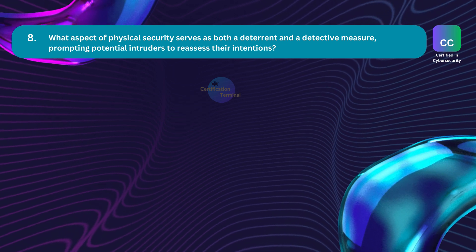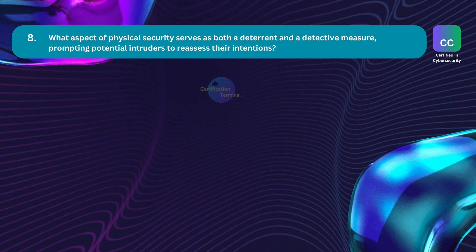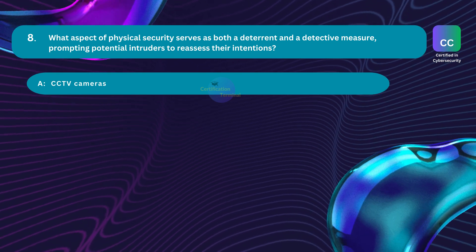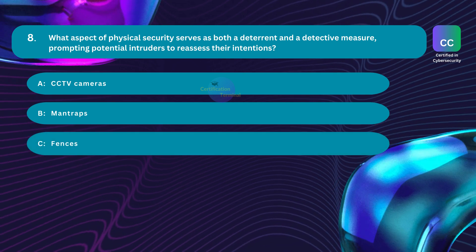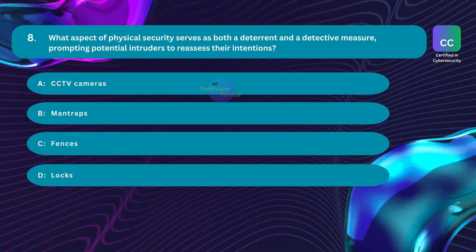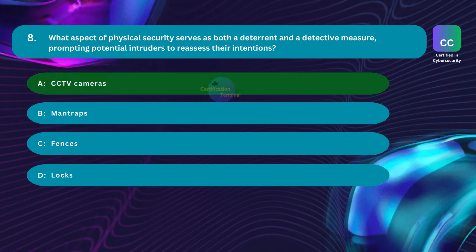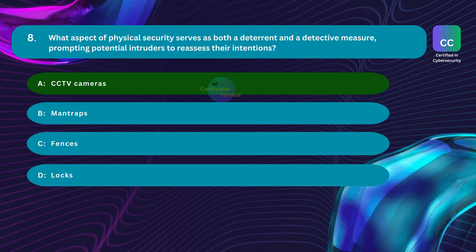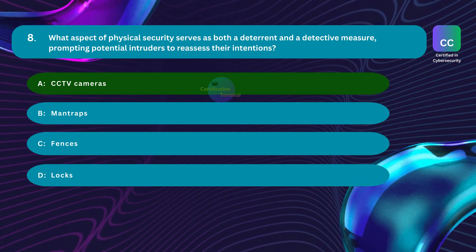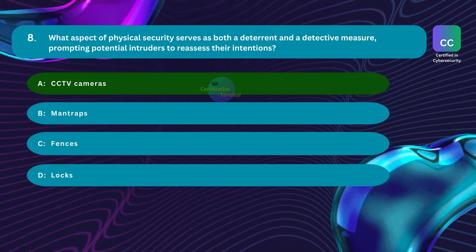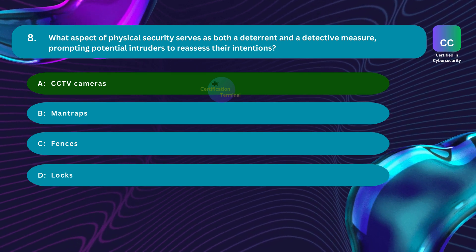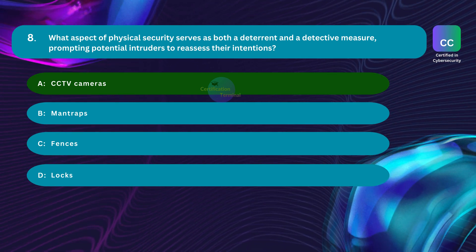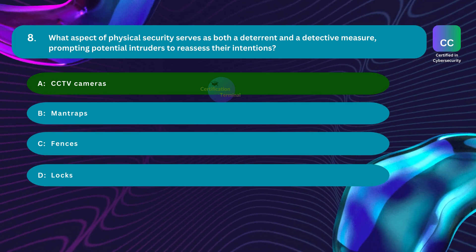Question number eight: what aspect of physical security serves as both a deterrent and a detective measure, prompting potential intruders to reassess their intentions? Option A: CCTV cameras. Option B: man traps. Option C: fences. Option D: locks. The correct answer is option A: CCTV cameras. Cameras are highly visible and serve as a strong deterrent — the knowledge of being recorded discourages many from attempting a crime. CCTV footage also provides valuable evidence after a security breach, helping identify perpetrators, their methods, and accomplices. This unique combination of deterrent and detective capabilities makes CCTV cameras a valuable aspect of physical security.